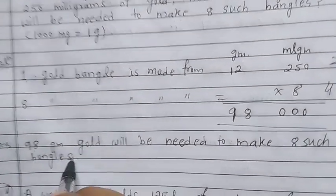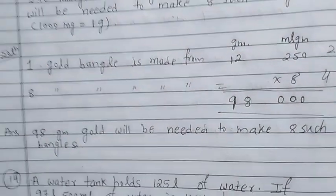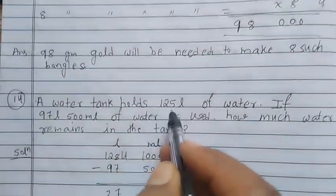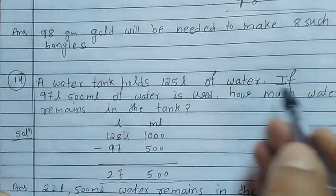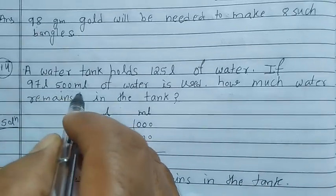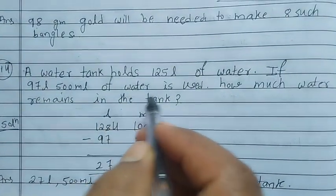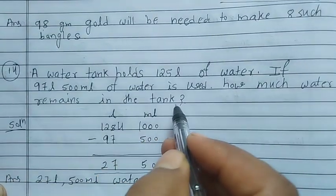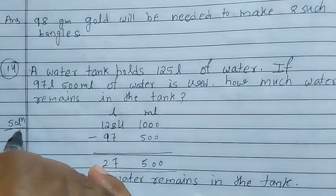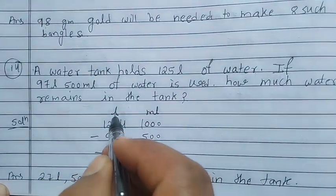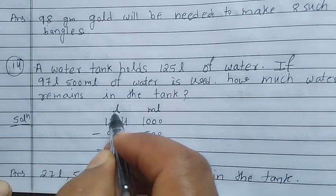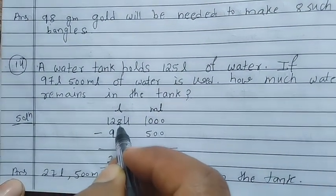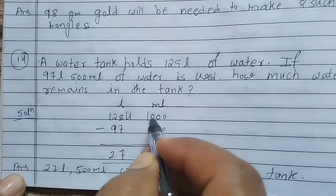Question 14: A water tank holds 125 liters of water. If 97 liters 500 milliliters of water is used, how much water remains in the tank? First write the solution. Make two columns — one for liters and one for milliliters. Write 125 liters, and in the milliliter column write 000.